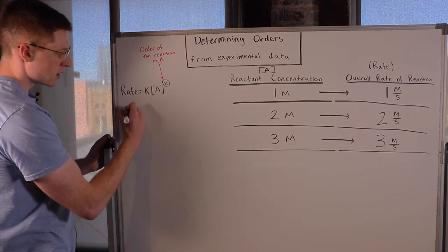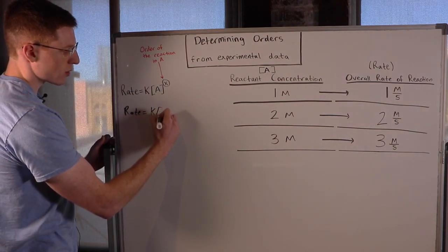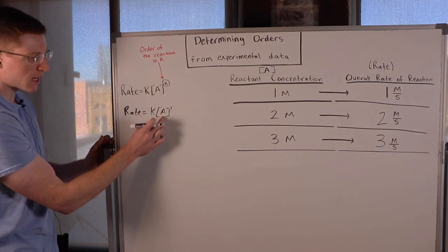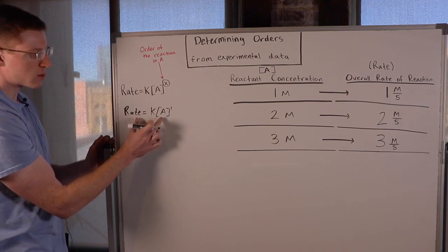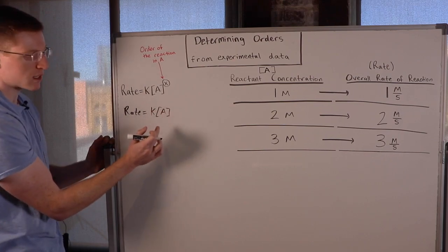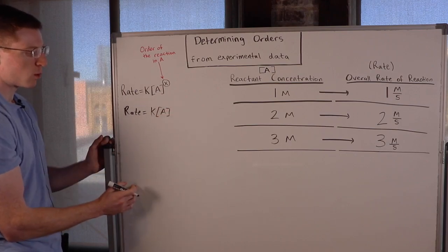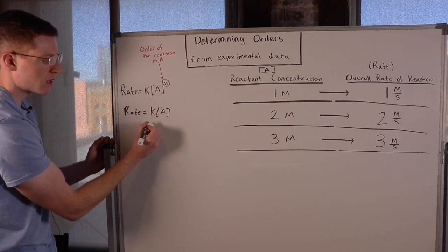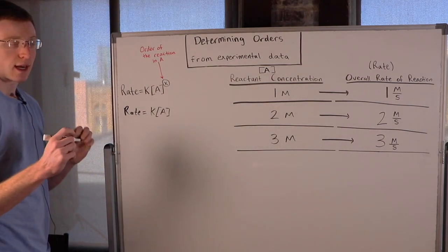So in this case we can say the reaction is first order in A, because if we double A we double the rate, and if we triple A we triple the rate. That's reflected in the math: rate equals K times A to the first power — usually you just write rate equals K times A, with an invisible exponent of 1. This is what the data looks like for a reaction that is first order in A.